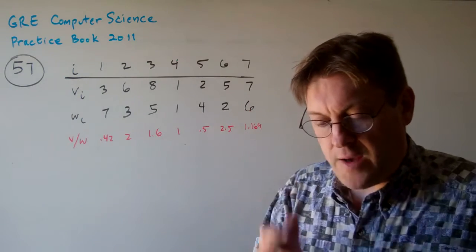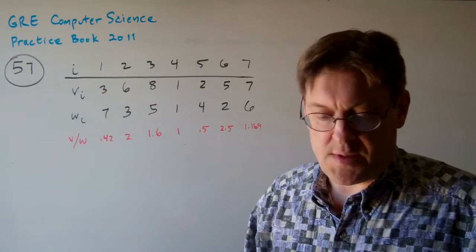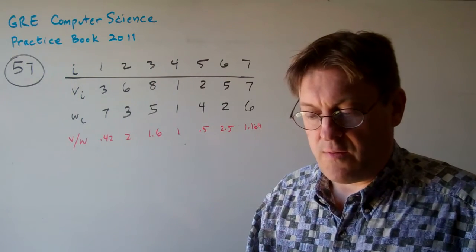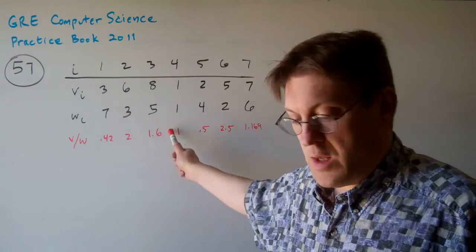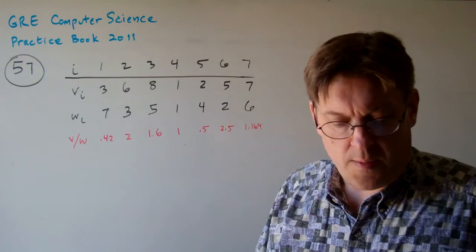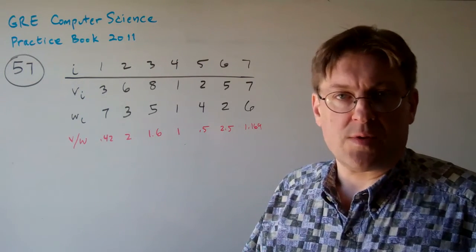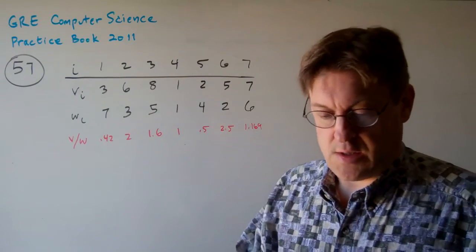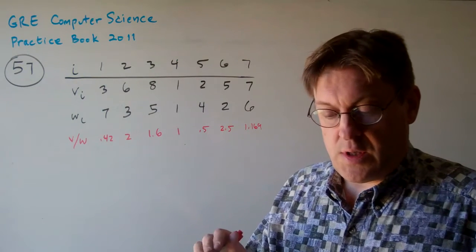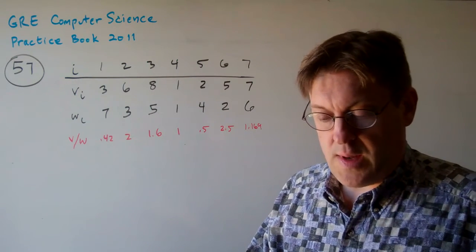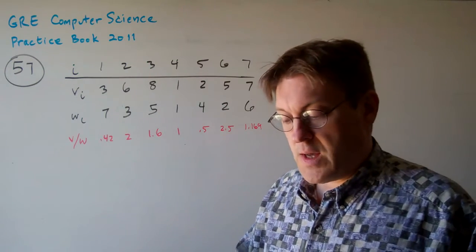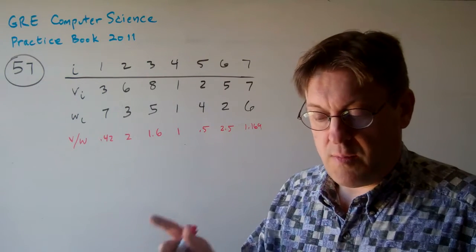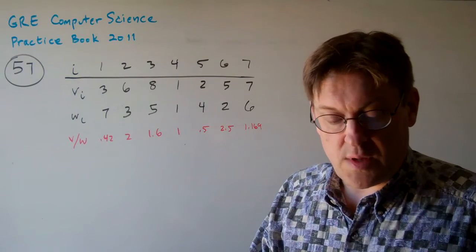Question 57. A hiker faces the 0-1 knapsack problem. There are seven items to be packed into the knapsack, each with the value V sub i and weight W sub i as shown in the following table. The 0-1 knapsack problem just means you can't put a fraction of anything into the knapsack, so don't worry about that. The knapsack, which is initially empty, can hold a maximum weight of 24. Some items have to be left behind, fractions cannot be packed. The optimality criterion is to maximize the total value of the items that are placed in the knapsack.